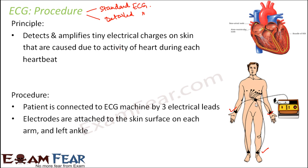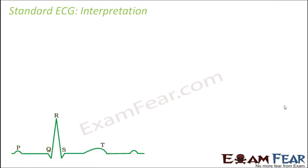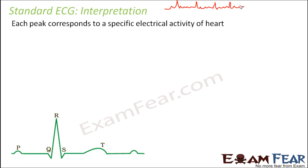In some cases you can see that the person has even more attachments — almost 10 leads, with many on the chest as well. This is for a detailed ECG. But for a standard ECG, having electrodes on the two arms and the left ankle is enough, and you can view the activity of the heart on the machine. The graph you see on the screen denotes the activity of the heart. Each peak corresponds to a specific electrical activity, and after the peaks, the same pattern gets repeated if the heart is functioning properly.